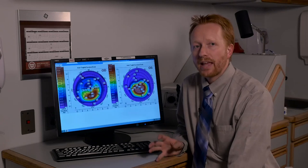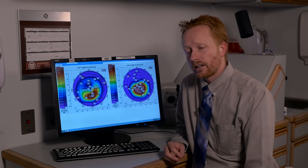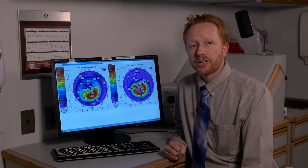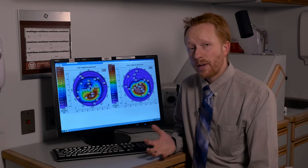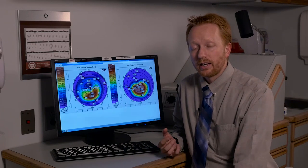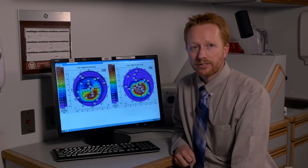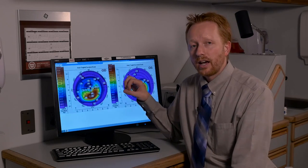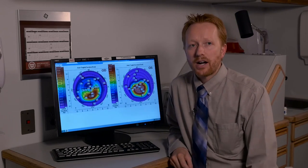Most topographers come with many other features, including pachymetry to look at the thickness of the cornea, posterior float, which is a measure of the inside surface of the cornea, and other measurements to get an even better idea of how the cornea is abnormally shaped and the best way to fit a contact lens. This is just a very standard pattern and a standard display that most topographers have.